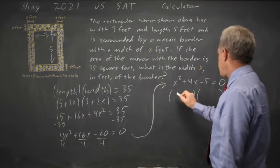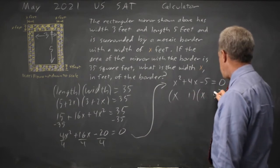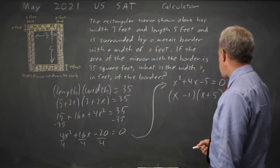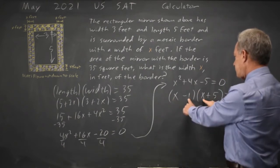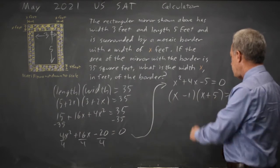And that can be factored. X and X, 1 and 5. I'll make the 5 positive and the 1 negative. And FOIL gives me X squared plus 5 minus 1X is plus 4X, minus 5.